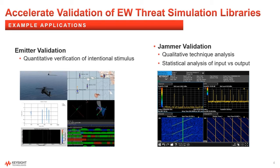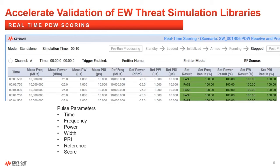You can use this capability for validating your emitters and also for validating any jammer capability that you are developing. Here is a screenshot of the real-time scoring feature. Each row represents one sampling interval — in this case, every half second.